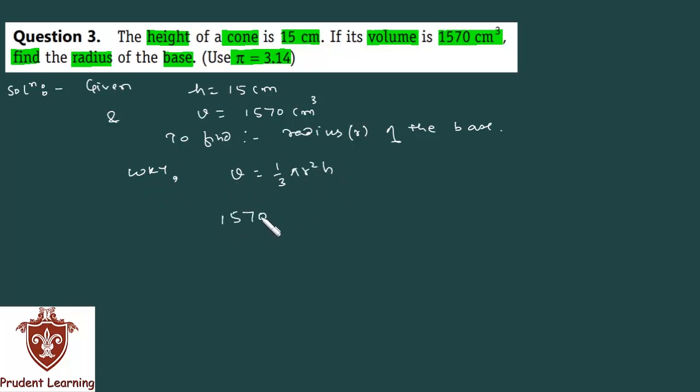You take 1/3 π. How much should you take here? 3.14 which is given, that we will take. If not mentioned, we would take 22/7. Radius is unknown, that's what we need to find, so we have r² into height h. You have h = 15.